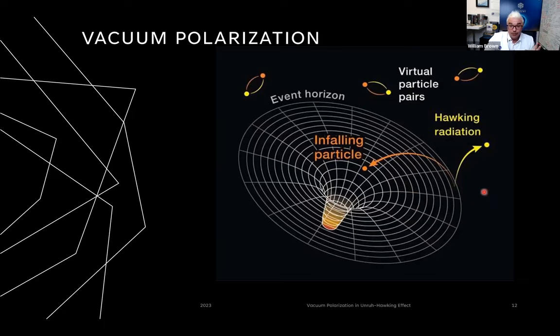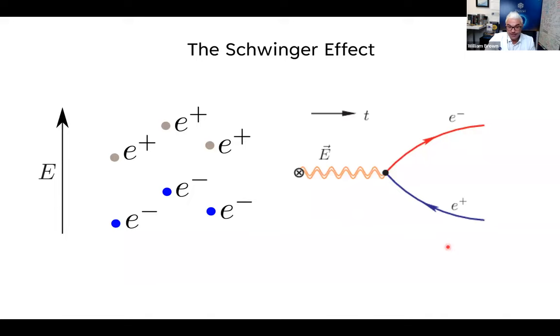And in the focus of our discussion here, the Schwinger effect is another way to generate this vacuum polarization. And instead of an extremely strong gravitational field, you have an extremely strong electrical field that is causing your ability to separate those balancing yin-yang particle pairs.